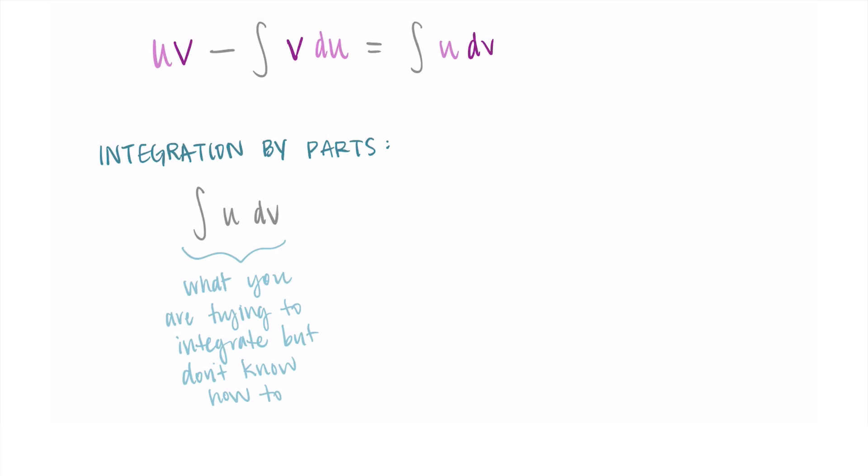So this is going to be what we start with, and our task then, and what integration by parts does for us, is it allows us to rewrite it as something new. So we can write it as u times v minus a new integral, where that new integral is v du. And the hope is that that new integral, v du, is something you do know how to integrate. So you're taking something you don't know how to integrate, and by splitting it up into parts, that's why it's called integration by parts, you can now write it as something new that you know how to evaluate. And that's the power of integration by parts.